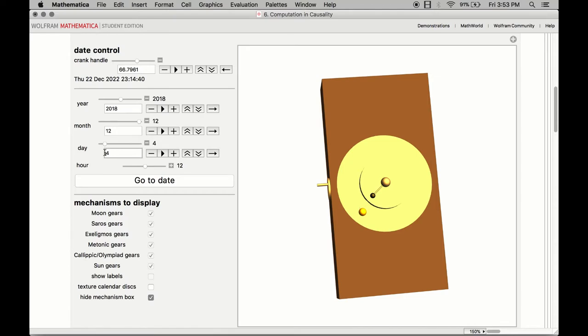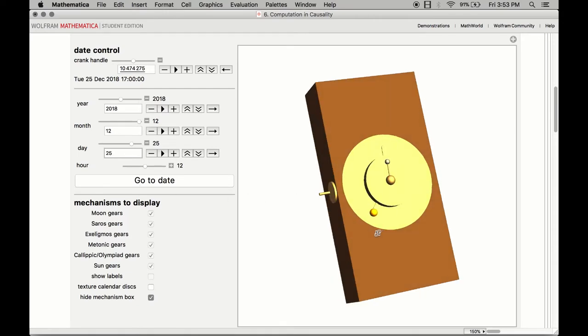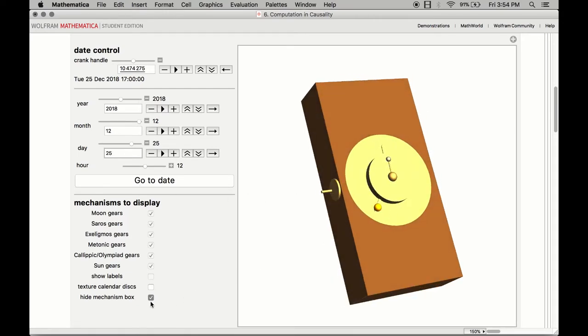As we have seen before, mechanistic models such as this one are not necessarily representing the actual mechanism of the movements of the celestial bodies that they are attempting to simulate, but they do capture some of their regularities.